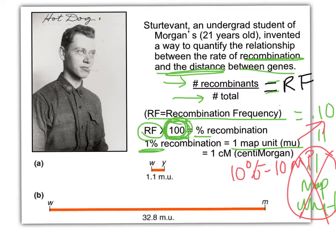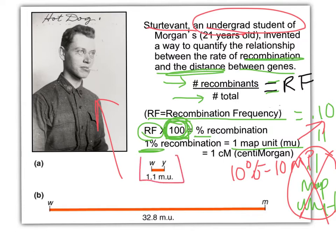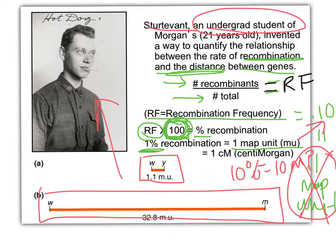Ten percent equals ten map units — that's a lot different than 0.1 map units. And the guy that figured this all out was an undergrad student named Sturtevant. And look at him — isn't he cool? This is just showing you, right, 1.1 map unit is a lot smaller than 32.8 map units. And remember, these are relative units just for the chromosome we're talking about.